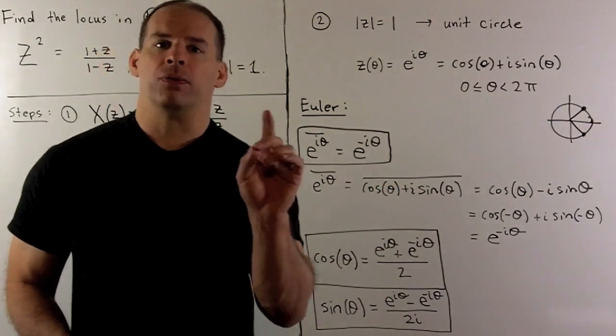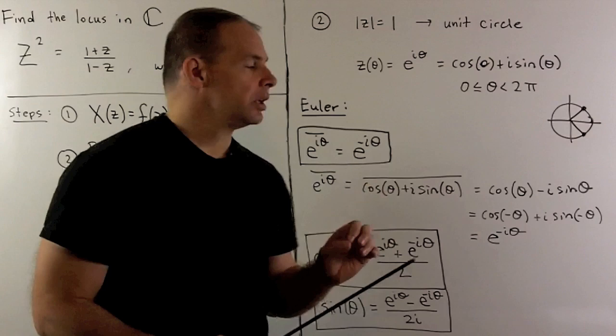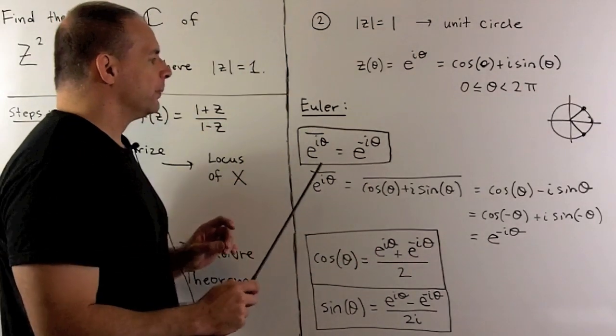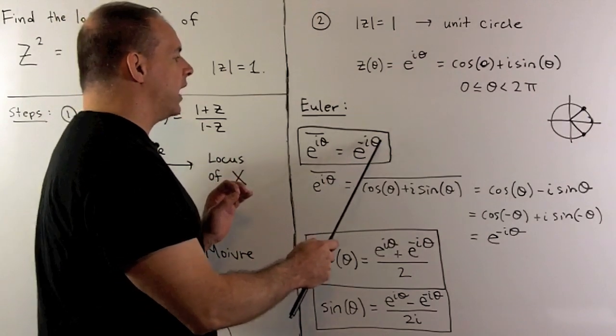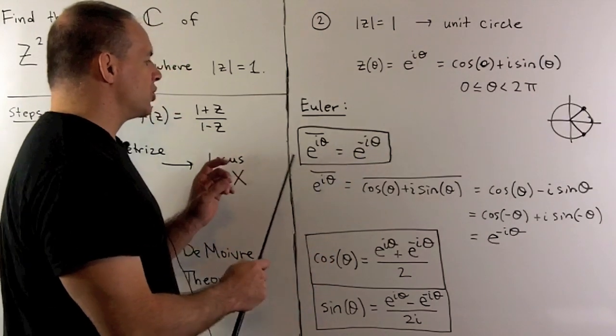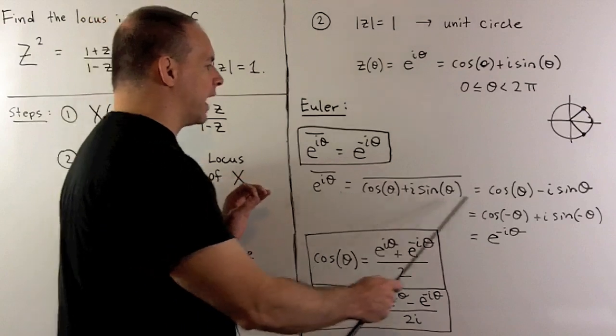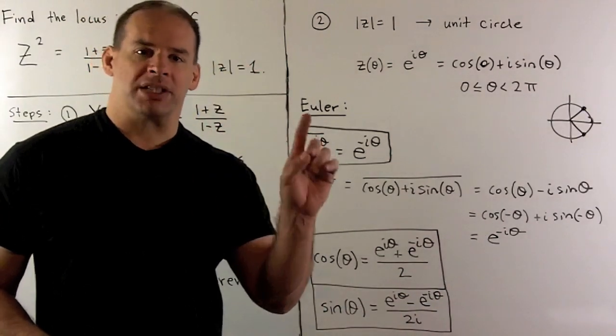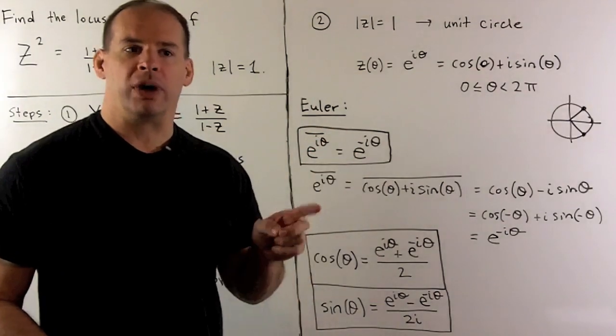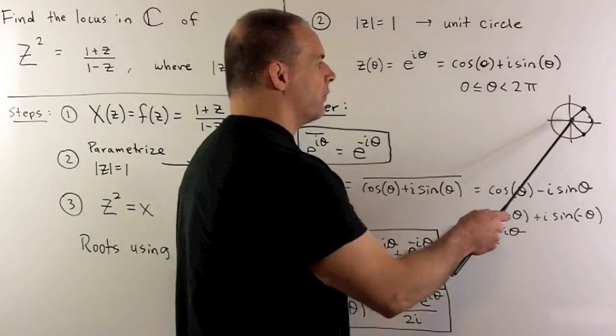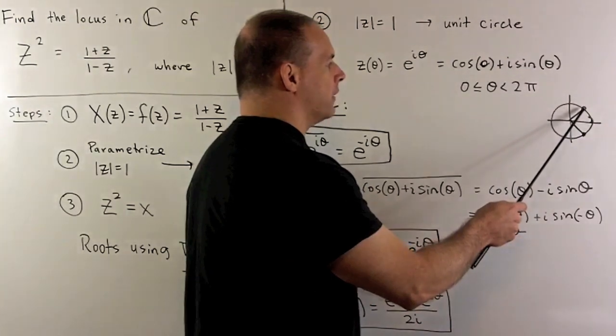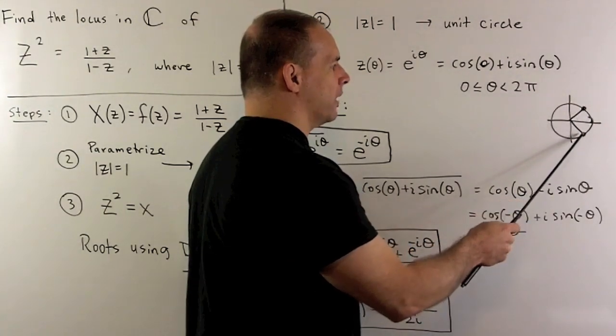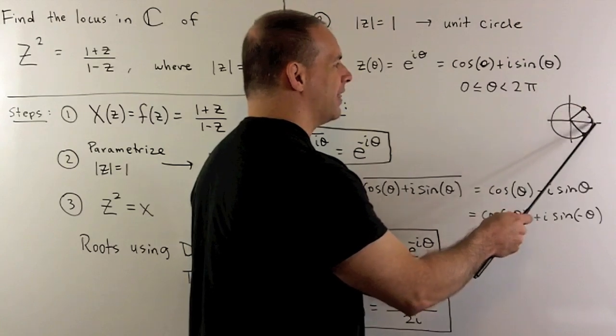I need a few formulas for the next board. If I take the complex conjugate of e to the i theta, we get e to the minus i theta. We can think of it as complex conjugation reflects our points through the real axis. If we had angle theta marking off this point on the unit circle, the complex conjugate goes to this point. So that's theta, that's minus theta.